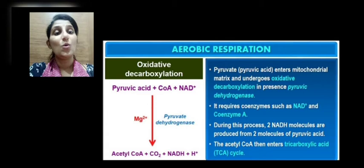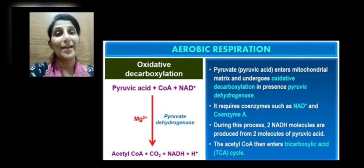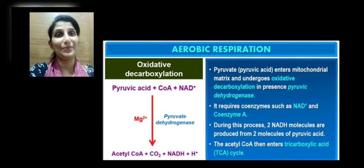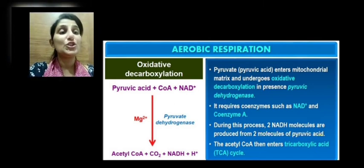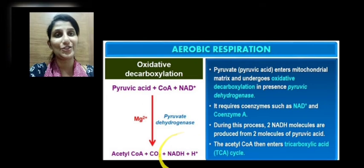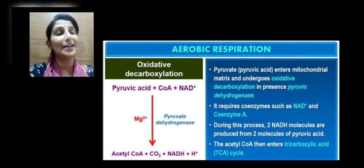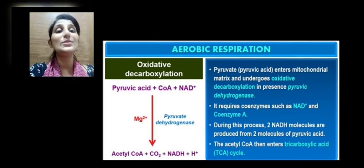This is the first stepwise removal of hydrogen atoms, called oxidative decarboxylation — named so because carbon dioxide is released during the process. When one molecule of pyruvic acid undergoes oxidative decarboxylation, one molecule of NADH is produced. Since glycolysis produces two pyruvic acid molecules, two molecules of NADH are produced in total.